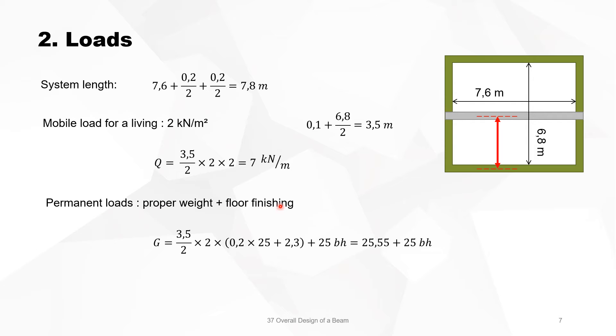Permanent loads is the proper weight and the floor finishing. The proper weight is a problem, we don't know the cross-section of the beam, so we call it B times H, so it's 25BH. And the proper weight of the floor we know, and the floor finish. The floor is 0.2 times 25, and the floor finish is 2.5 per square meter, times 3.5 divided by 2, and then on the other side also, so it's times 2.